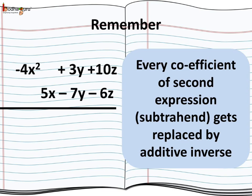For example, minus 4x square plus 3y plus 10z. And we need to subtract from it 5x minus 7y minus 6z. We write all the like terms one below the other. Now, minus 4x square and 5x don't have the like terms. Minus 7y is written below 3y and minus 6z is written below 10z.